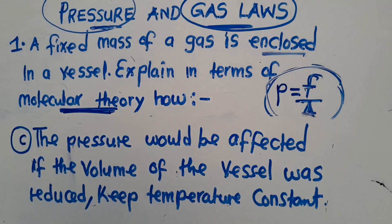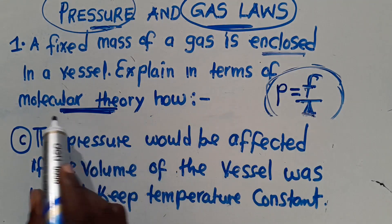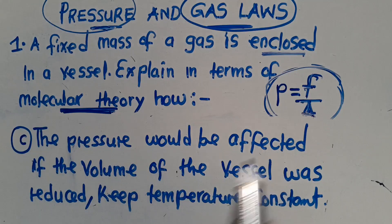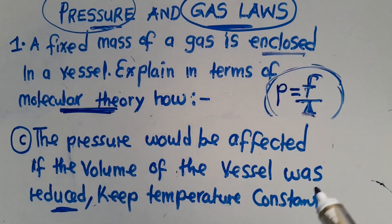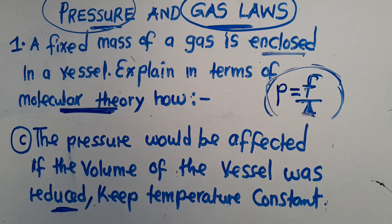We move to the last question. We are asked to explain in terms of molecular theory how the pressure would be affected if the volume of the vessel was reduced, keeping temperature constant. If the volume of the gas is reduced while keeping the temperature constant, the particles of the gas in the vessel will collide with the walls more frequently.